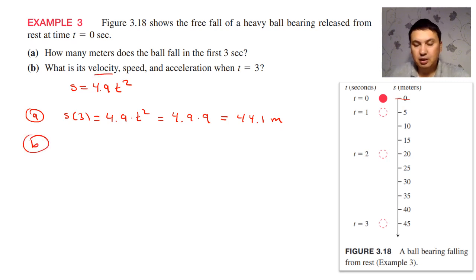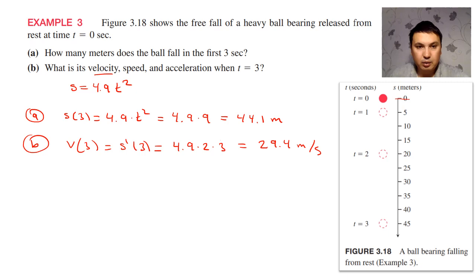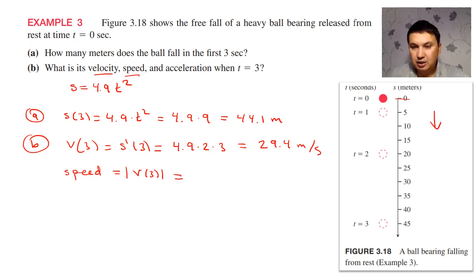Next, we'd like to find the velocity. Velocity is the derivative of the displacement, so v of 3 is s prime of 3. Taking the derivative of 4.9t squared gives 4.9 times 2 times t. Evaluating at t equal to 3 gives 29.4 meters per second. The speed at t equal to 3 is the absolute value of velocity. Since we regarded the falling direction as positive, this is already positive, so speed is also 29.4 meters per second.